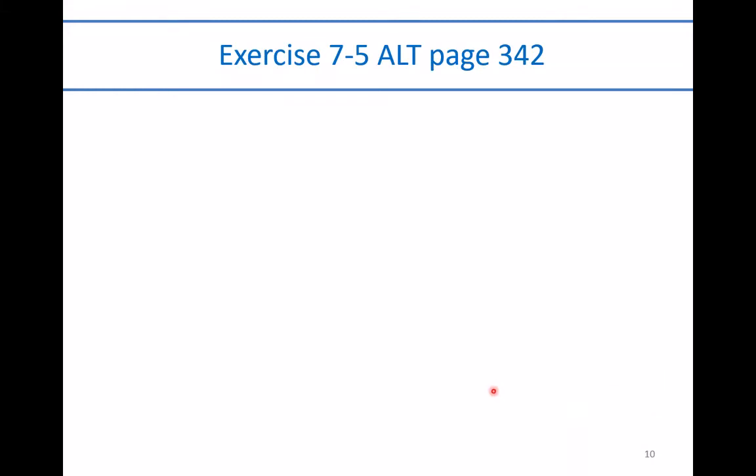Today, we're taking a look at an alternate version of Exercise 7-5 from page 342 of the textbook, Chapter 7, Reporting and Analyzing Receivables. This problem is looking at the percent of accounts receivable method.